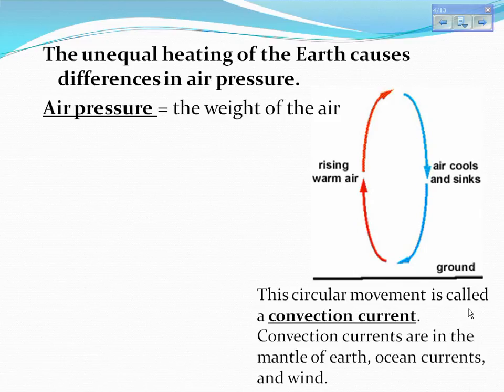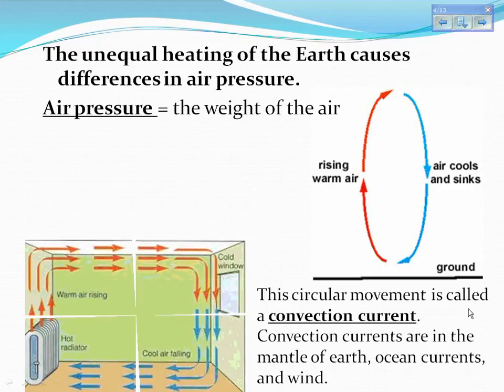This circular movement is called a convection current. We've talked about convection currents in other parts of our earth science — in the magma in the mantle of earth, in our ocean currents, and now we're seeing convection currents that are forming wind. You can see real-life convection currents when you have a heater distributing hot air into a room and the cold air sinks down.